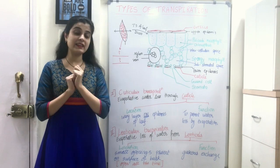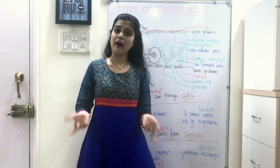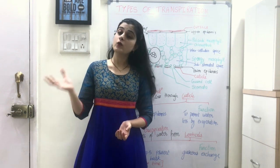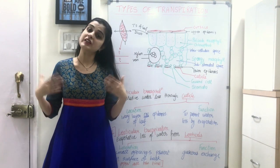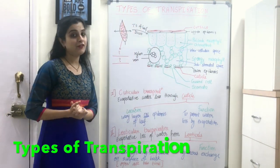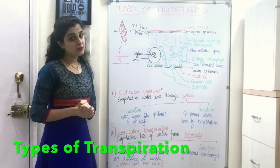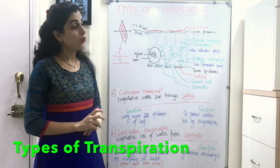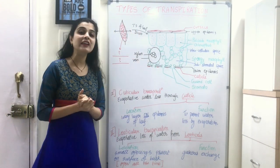Now the next thing we are supposed to talk about is types of transpiration. We have proved water comes out in the experiment, and we've seen the rate of transpiration in Ganon's Potometer. Now we are going to talk about different types of transpiration. Before that, you should know this diagram — this is the transverse section (TS) of a leaf.